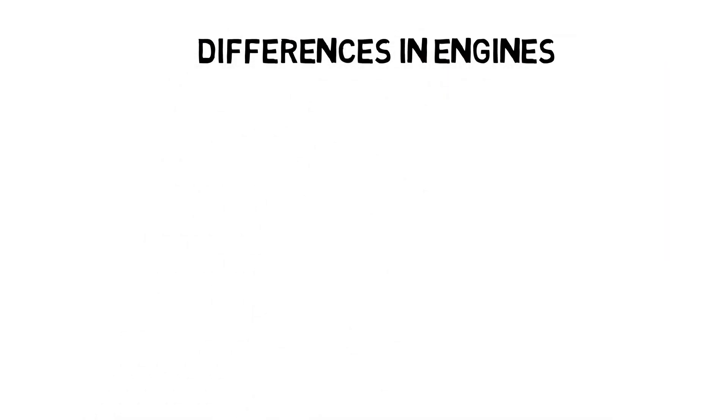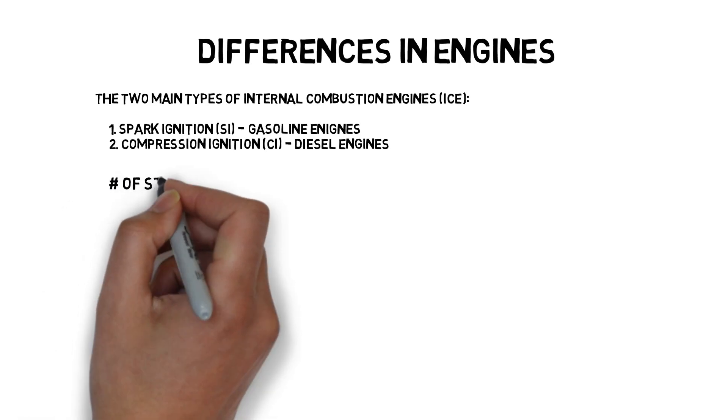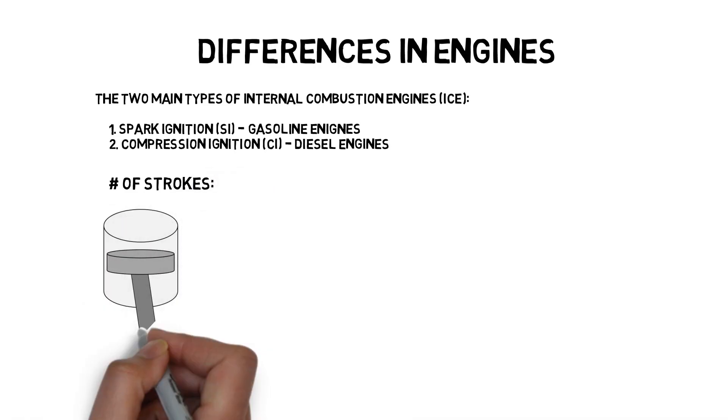The two main types of internal combustion engines are spark ignition used in gasoline engines and compression ignition, found in diesel engines. In addition, engines also vary in the number of strokes they require to complete a cycle.